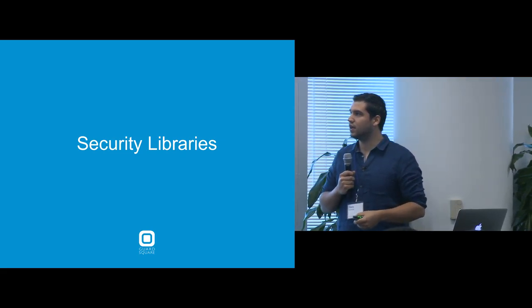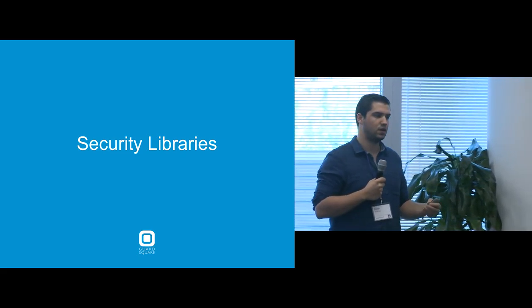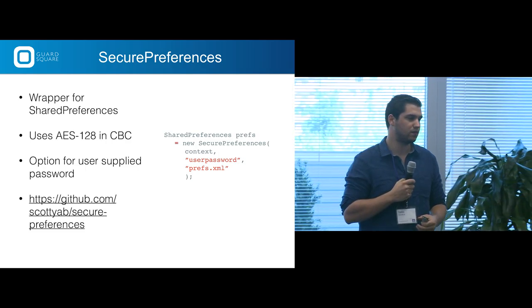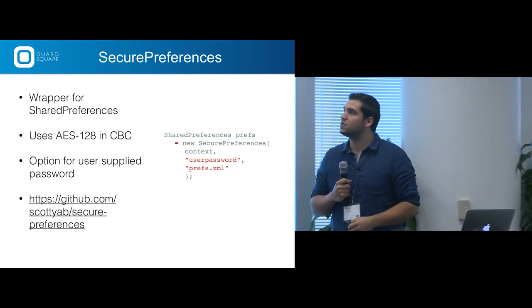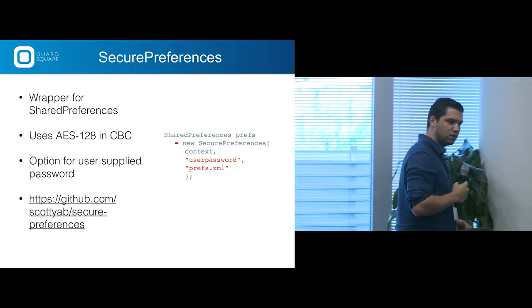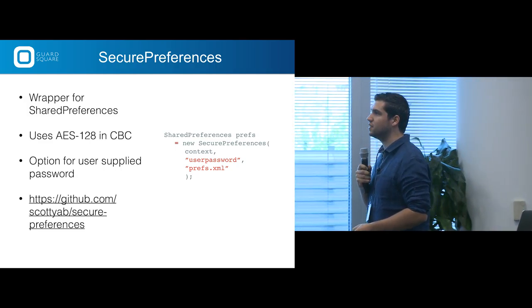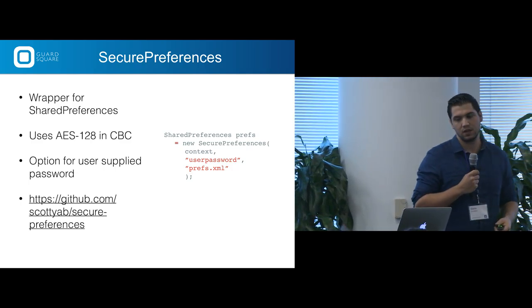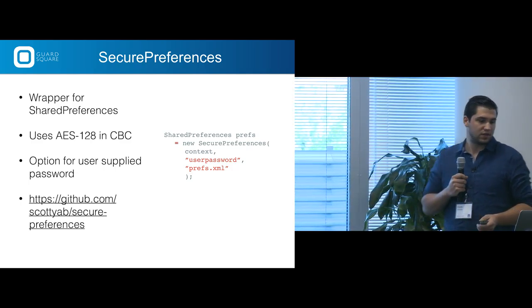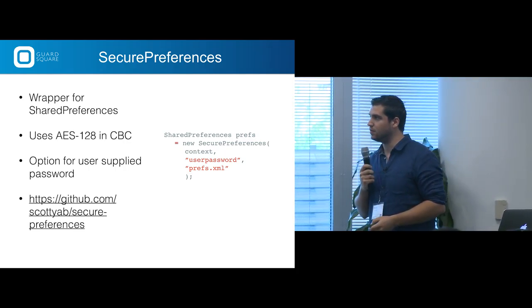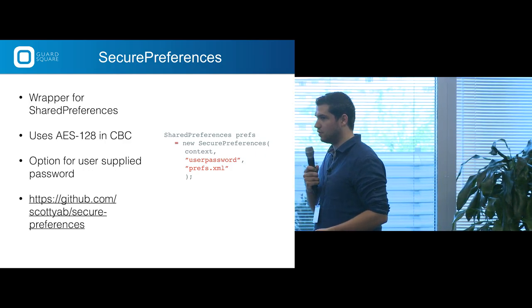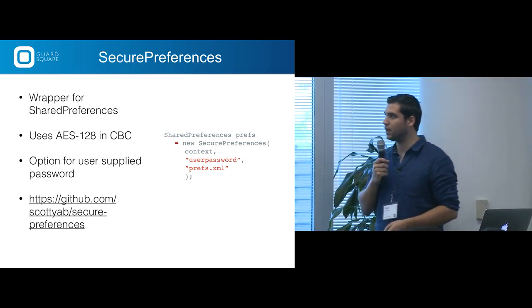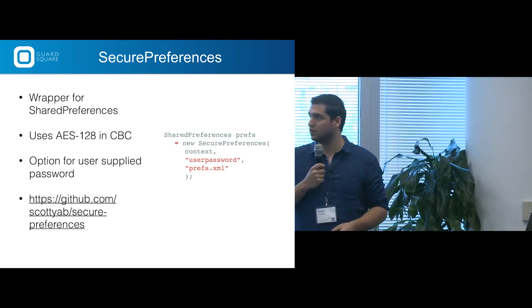By securing and examining applications, I gathered some libraries I find interesting. For example, Secure Preferences — if you use shared preferences in Android, you can use this library by Scott Brown, which is a wrapper for shared preferences using AES-128 in CBC mode, which is a good mode to use, not ECB. It lets you configure it with a user-supplied password. All the key-value pairs you store are encrypted at runtime and decrypted on the fly, and you can still use the standard shared preferences implementation.